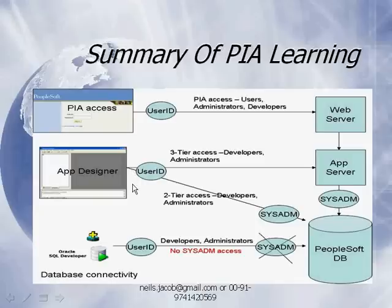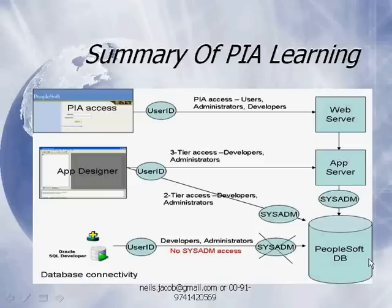For two-tier access, we give the user ID and connect to the PeopleSoft database through the sysadm user in the database. For three-tier access, we connect to the application server, then use sysadm to connect to the database. For the entire architecture, we come through the web server, percolate to the app server, and then using the sysadm database, connect to the PeopleSoft database.